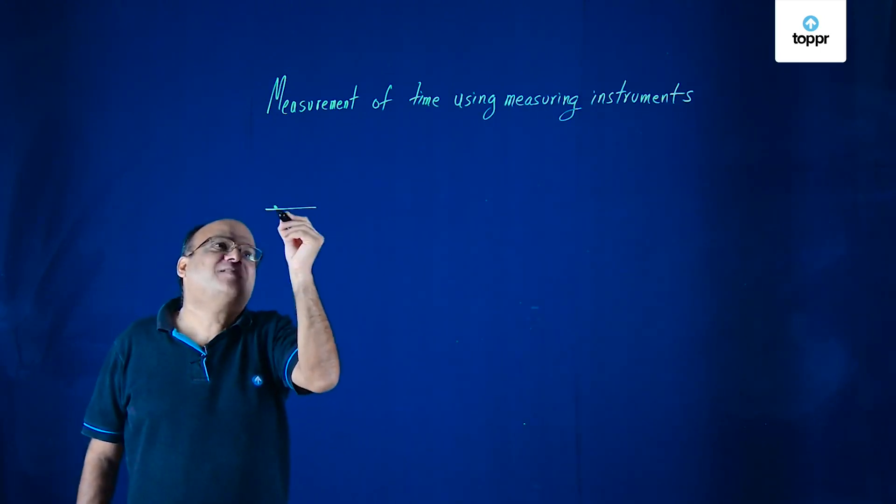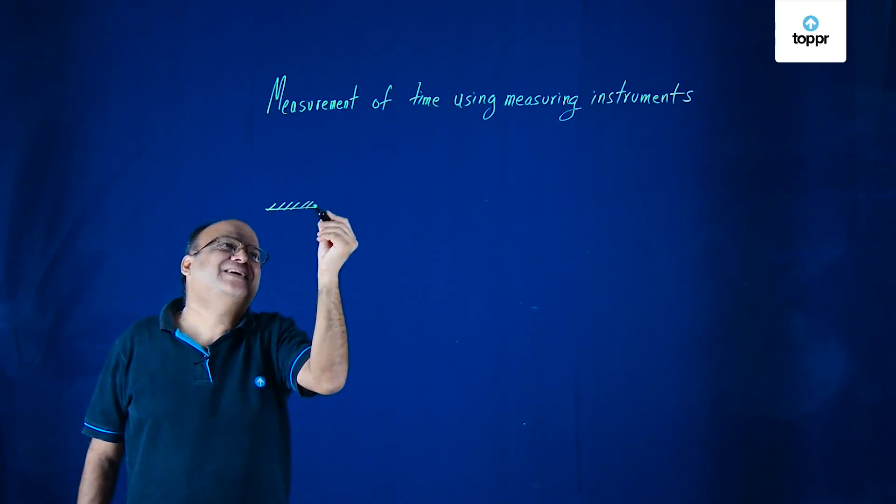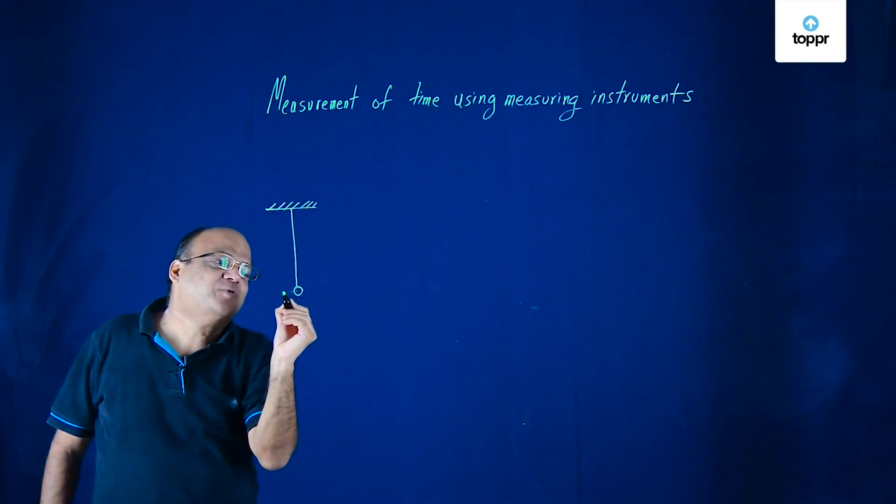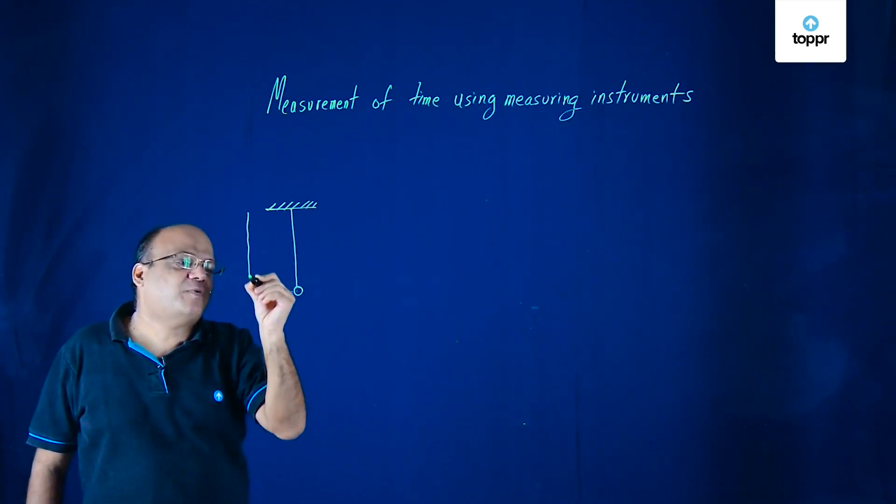Simple pendulum is very simple. There is one bob hanging here. The length we take up to the center of mass of the bob.